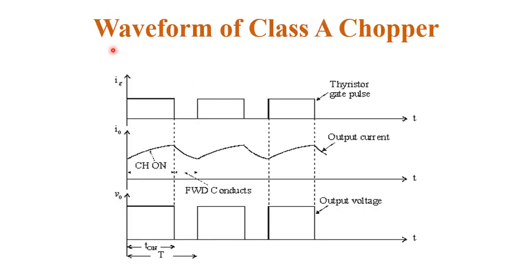Now let's discuss the operation of class A chopper with the help of waveforms. IG is the gate current, which is required if we use an SCR as the chopper. When we apply gate current, the chopper starts working. When the chopper is on, the inductor starts charging from its minimum to maximum value, and the output voltage across the load equals VS. When the chopper is off — meaning zero gate current for the SCR — the inductor releases its energy from maximum to minimum value and the output voltage equals zero.